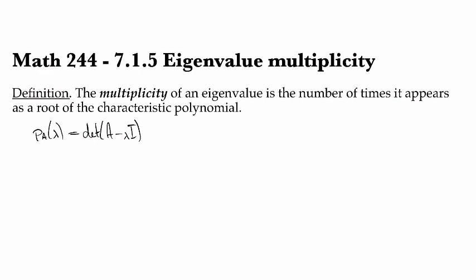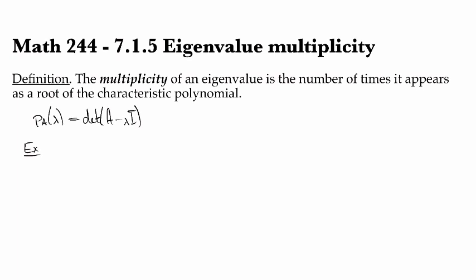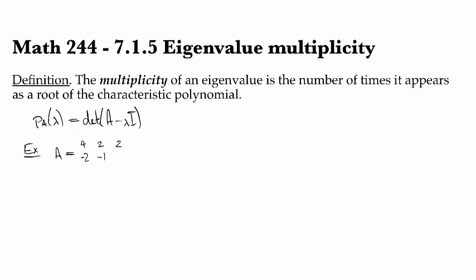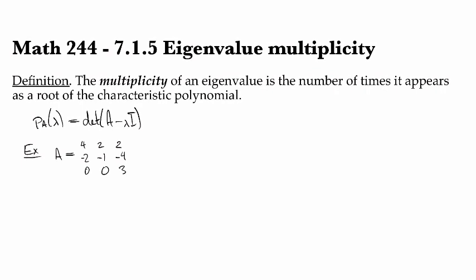Here's an example of that. Let's work out the eigenvalues and eigenvectors of a 3 by 3 matrix that looks like [4, 2, 2; -2, -1, -4; 0, 0, 3].